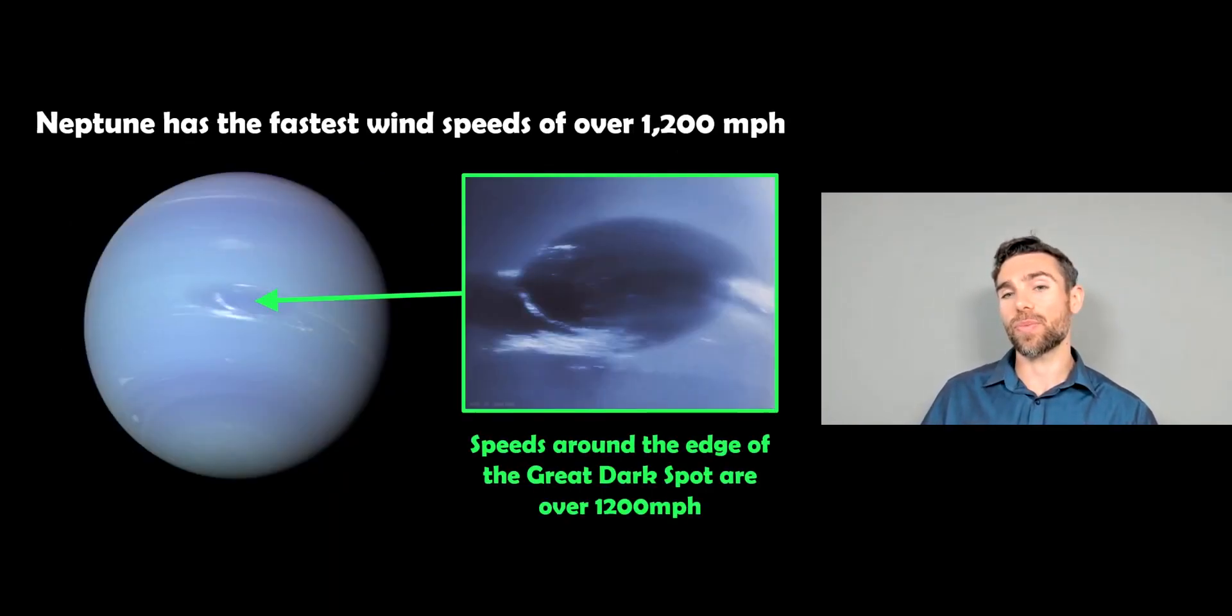But then we get to Neptune. Now, Neptune is the furthest away, but it also has the fastest wind speeds known in the solar system. So they are over 1,200 miles per hour. And like Jupiter, it has a very large storm on there. So the Great Dark Spot is where these greatest wind speeds have been measured. And it's around the edge of that storm, you're getting over 1,200 miles per hour, even approaching 1,300 miles per hour. So this is where the greatest wind speeds are on Neptune. Again, it's the furthest planet from the Sun. We wouldn't expect that. There's less energy from the Sun to drive it.